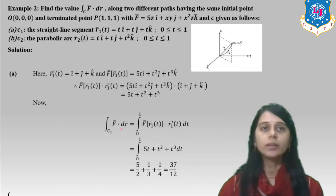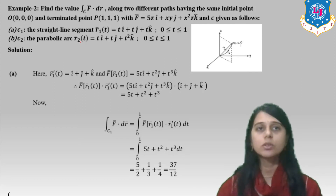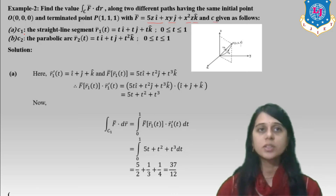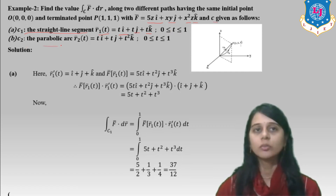Second example: find the value of ∫F-bar · dR-bar along two different paths with the same initial point (0,0,0) and terminal point (1,1,1). The vector field is F-bar = yz·i-hat + xy·j-hat + x²z·k-hat. Path C1 is a straight line segment with R₁(t) = t·i-hat + t·j-hat + t·k-hat, t from 0 to 1. Path C2 is a parabolic arc with R₂(t) = t·i-hat + t·j-hat + t²·k-hat, t from 0 to 1.